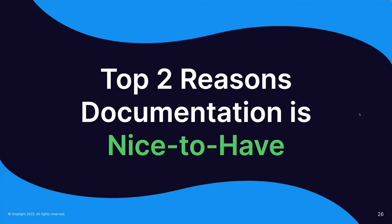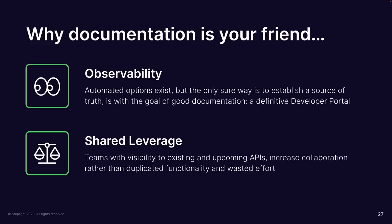So we've described the top reasons you must have this, and the positives of doing it. The first positive outcome is observability — the antithesis of sprawl and zombie APIs. We want to be able to look at the catalog of things we have, how they relate to each other, and ultimately have one clear view. The second positive is shared leverage: building a collaborative culture to reduce wasted effort and really build powerful reusable capabilities with your APIs.